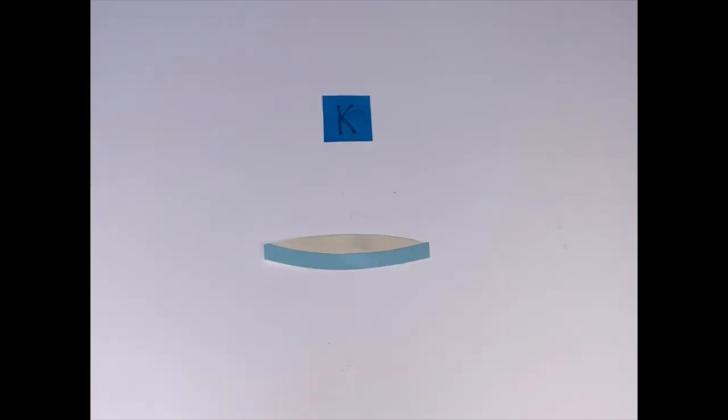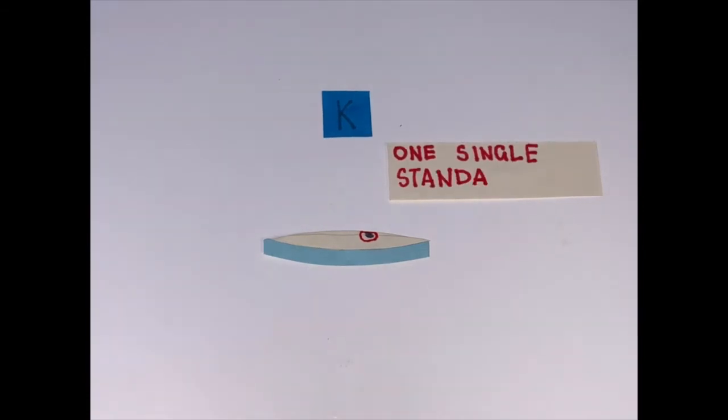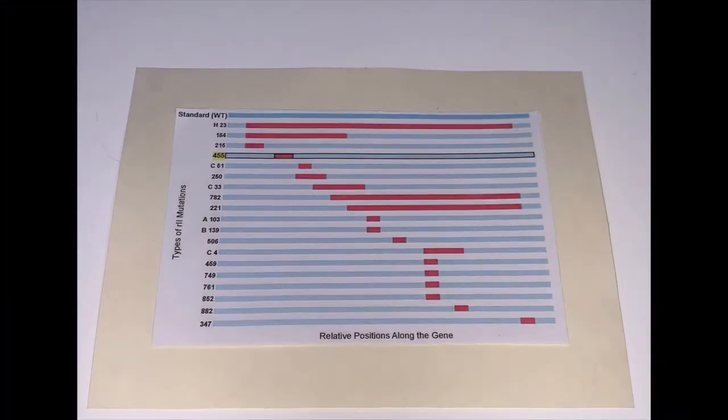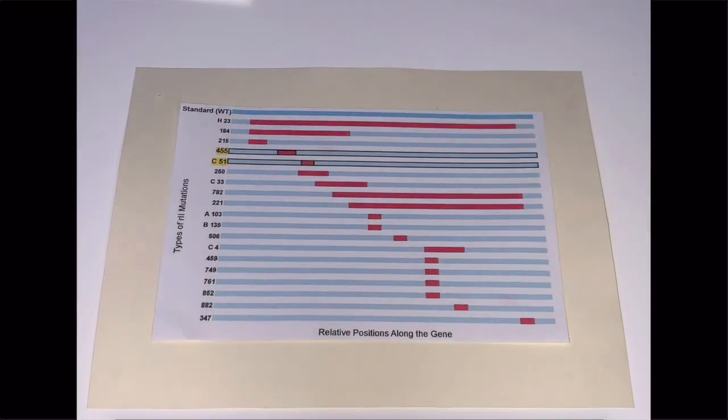It is important to note that this experiment allowed Benzer to map the gene because the growth on K phenotype was so sensitive that even a single standard type in 1 million mutants would produce growth on K. This is a figure similar to one in the paper, which more clearly shows how this test was used to determine structure. Take mutant 455 and C5-1. They clearly have no overlap and could recombine producing a standard type.